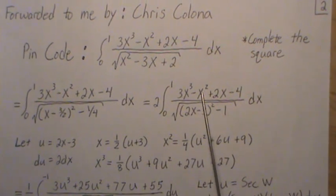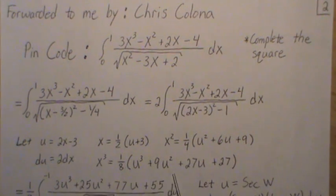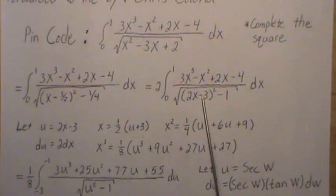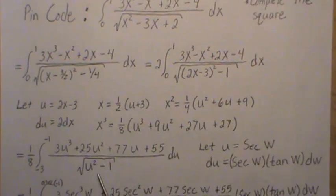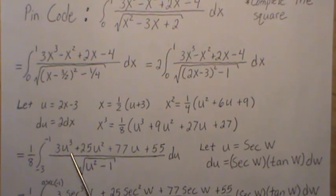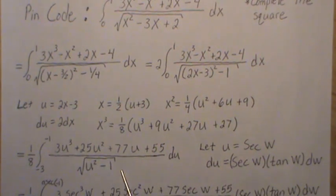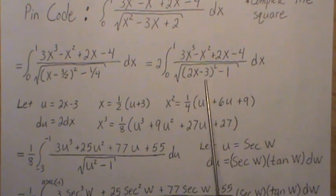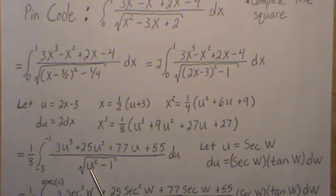If you square x, you get this quantity. You plug it in for x squared. And if you cube it, you get this quantity and plug it back in. So that's what this step is. And then we collected like terms. Right? And this is u.